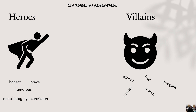As a bonus, I've given you two types — or two tribes — of characters: the heroes and the villains. The heroes are the good guys. Positive words are used to describe them, such as honest, brave, humorous, moral integrity, and conviction. Then you have the baddies, called villains or bad characters. Words such as wicked, corrupt, bad, moody, and arrogant are used to describe them.